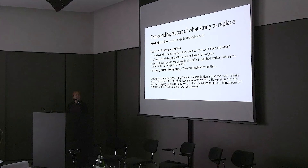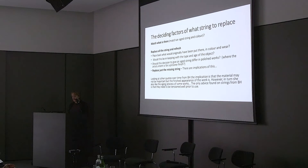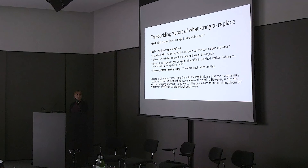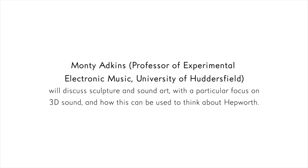So the deciding factors of what string to replace: do you match what's there? Do you match an aged string in colour? Do you replace all the strings and refresh them — putting back what was there in colour and wear, so very dark? Would this be in keeping with the type and age of the object? Should this decision be different with polished work, which is meant to be pristine? Should we consider that aged pieces have aged string? And just replacing one missing string has implications. She seems to say over time that the important thing is the finish of the work — but sometimes she also liked aged things. The only advice she ever gave with strings was to tension them. It's always a discussion and it'd be nice to discuss it together.